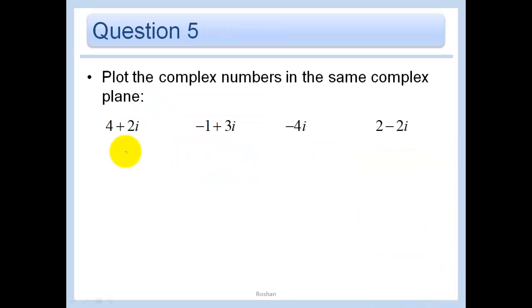So let's plot a couple of these on the same complex plane. So remember this is real and this is imaginary. Some colors here. So 4 plus 2i would be 1, 2, 3, 4 and then 2 on the imaginary. So this is 4 plus 2i. Minus 1 plus 3i would be minus 1 and then 3 on the imaginary plane. So that's minus 1 plus 3i.